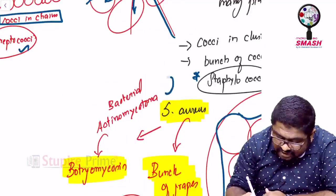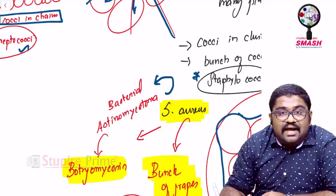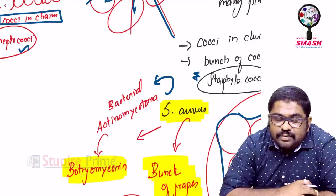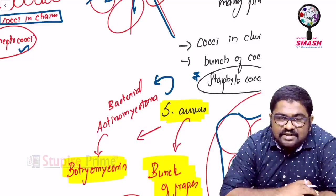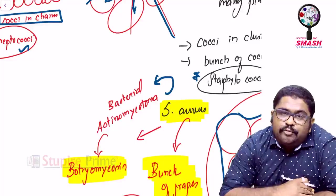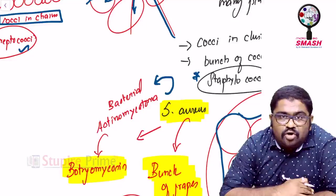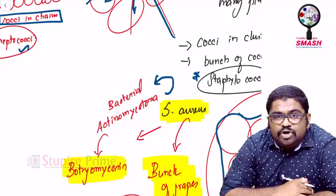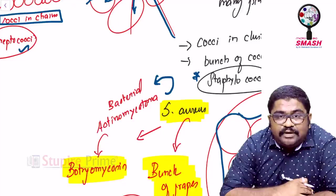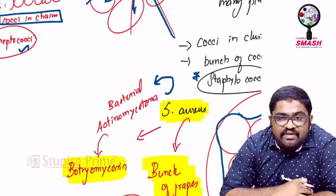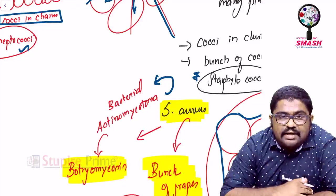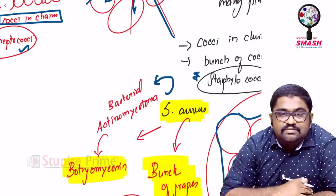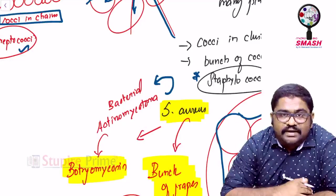Now, you have Staphylococcus aureus causing a condition called as bacterial actinomycetoma. Wait, you will know that actinomycetoma is caused by other bacteria like Actinomycetes and Nocardia. Trust me, actinomycetoma can be caused even by Staphylococcus aureus. When I use the word eumycetoma, it is caused purely by a fungi. When I say actinomycetoma, it is caused by anything other than a fungi, but most commonly a bacteria.